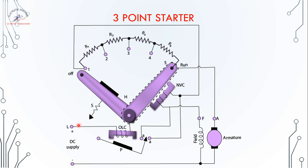In operation, the positive supply is connected via the overload coil, which becomes magnetized. If the current flowing through the overload coil exceeds the required limit, the magnetic element P moves close towards the OLC contact.